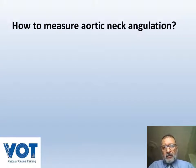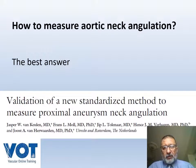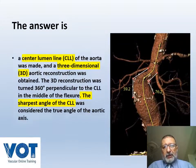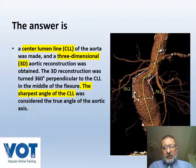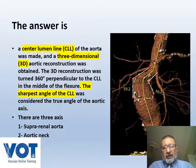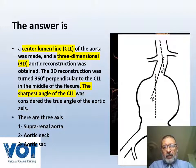The first point: how we measure aortic neck angulation. One of the best papers to answer this question is a paper from the Netherlands on validation of a new standardization method to measure proximal aneurysm neck angulation. It mentions that you need to measure the central luminal line (CLL) by 3D aortic rendering. You have three axes: an aortic axis, a neck axis, and an aneurysm axis. From these three axes you can measure the alpha angle — between the aortic axis and the neck axis — and the beta angle — between the neck axis and the aortic sac axis.